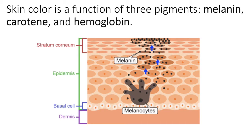Melanocytes are the melanin-producing cells. They reside in the stratum basale and they appear to have cytoplasmic extensions — sort of like an octopus-looking cell — and the branches of that cell weave through the stratum spinosum.